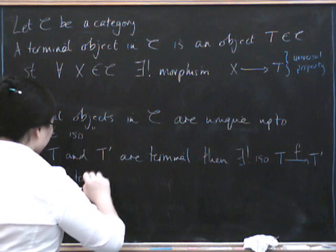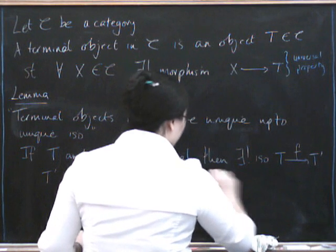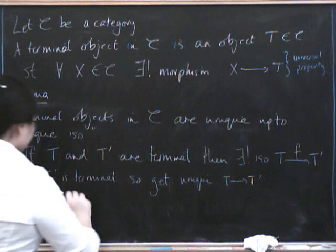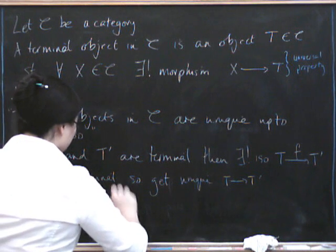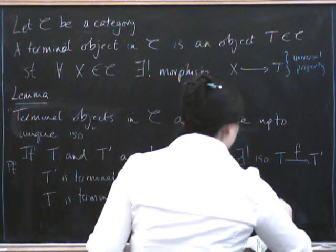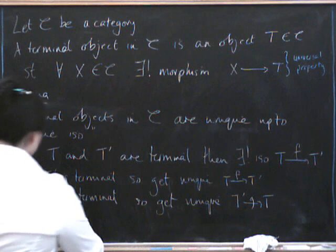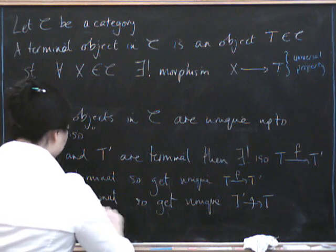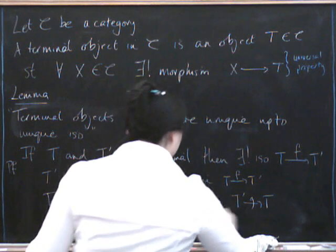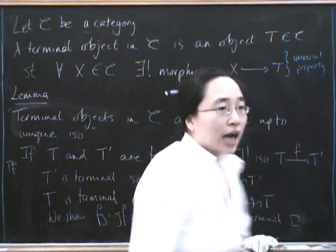T prime is terminal. So we get a unique map from T to T prime. This is the proof. So T is terminal. So we get a unique map T prime to T. Let's call that F and G. And finally, we can show that F, G equals G, F equals one since T and T prime. Ah, I have to stop.